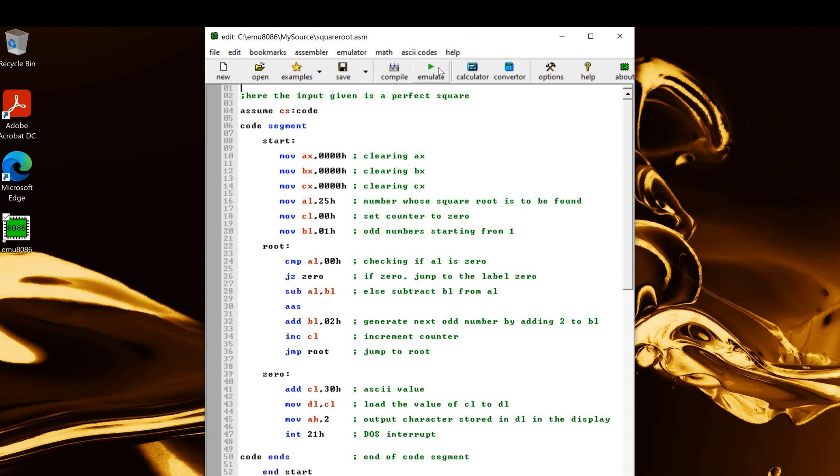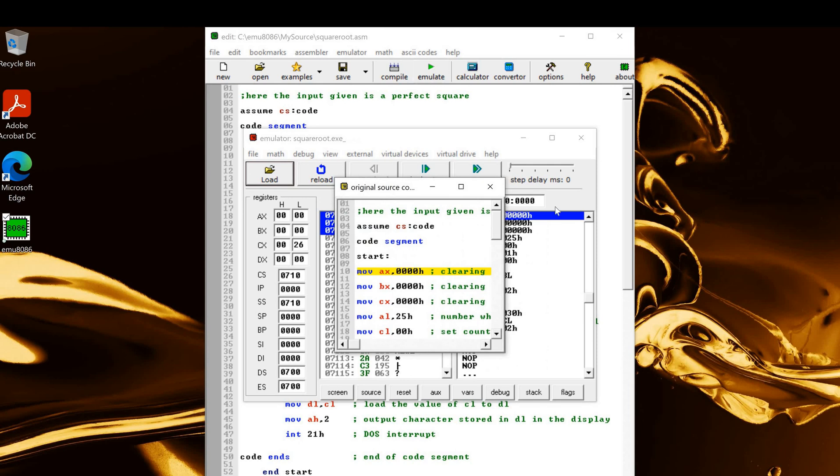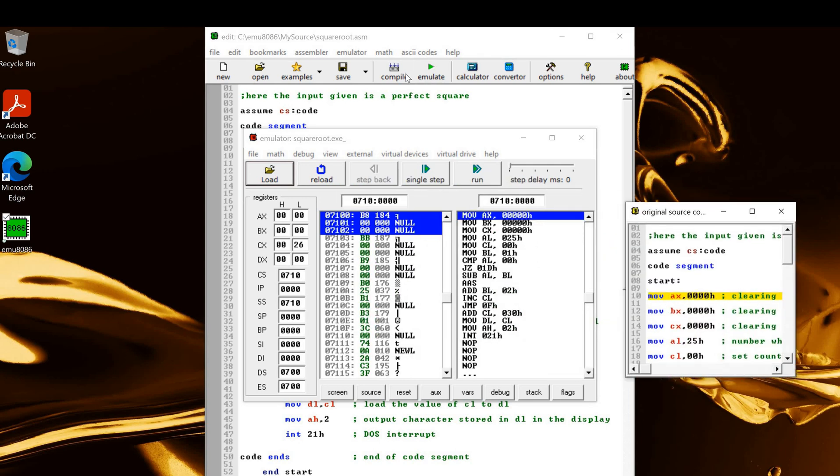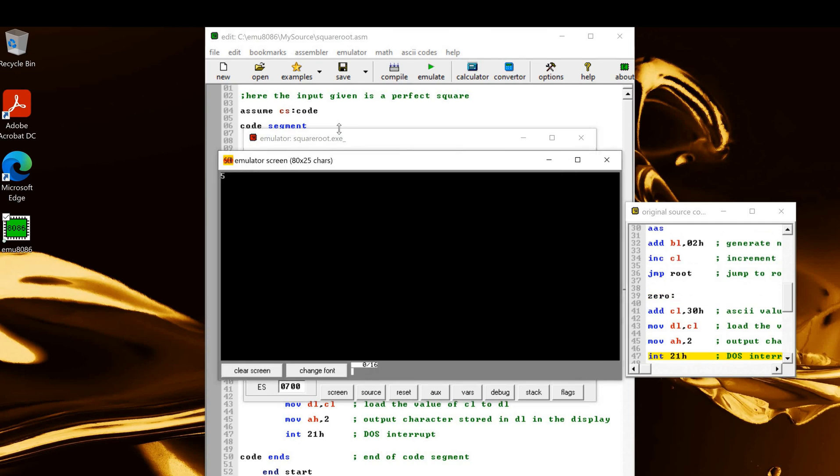Now we'll press the emulate button. We'll see the window which shows the original source code. We have single step execution and a single run. On performing the single run execution, we will get the result as 5, square root of 25.